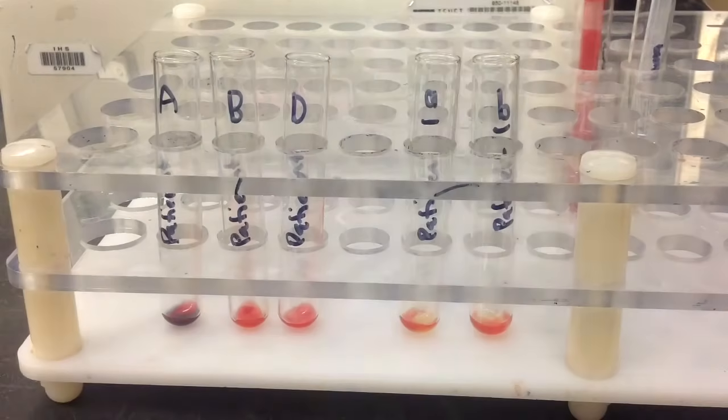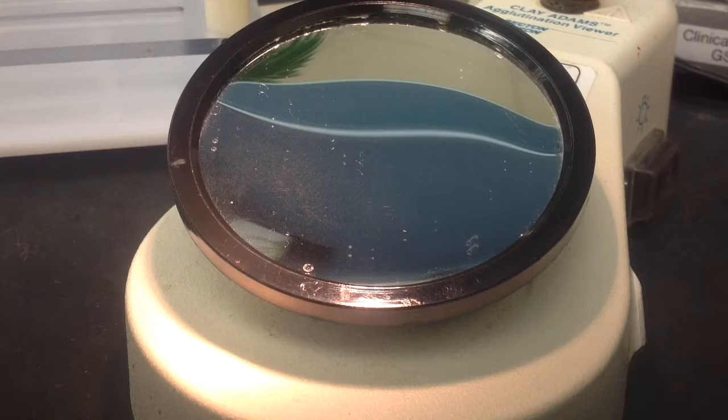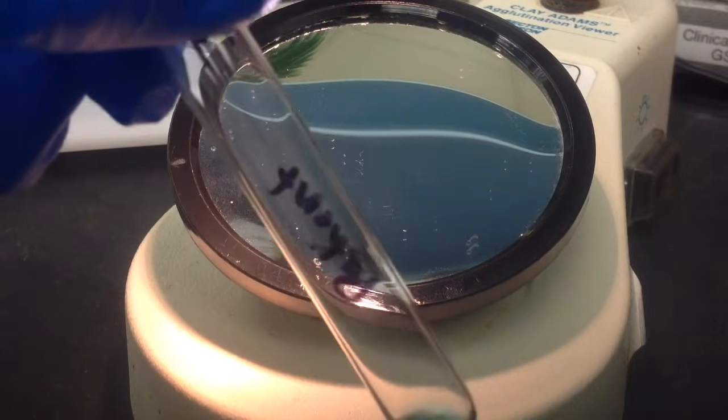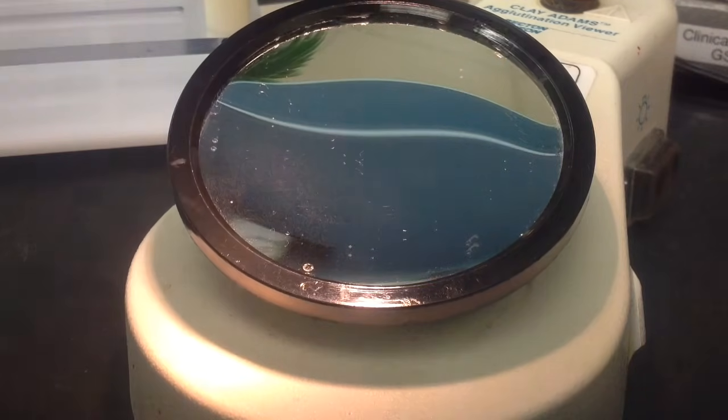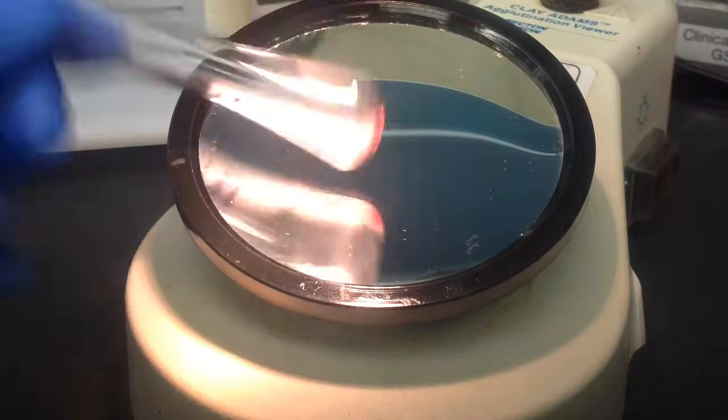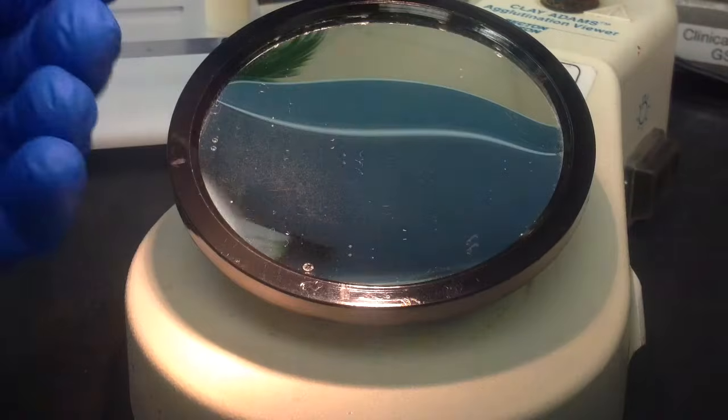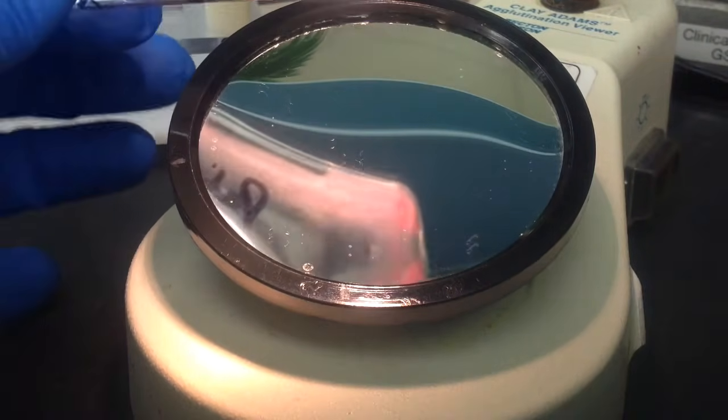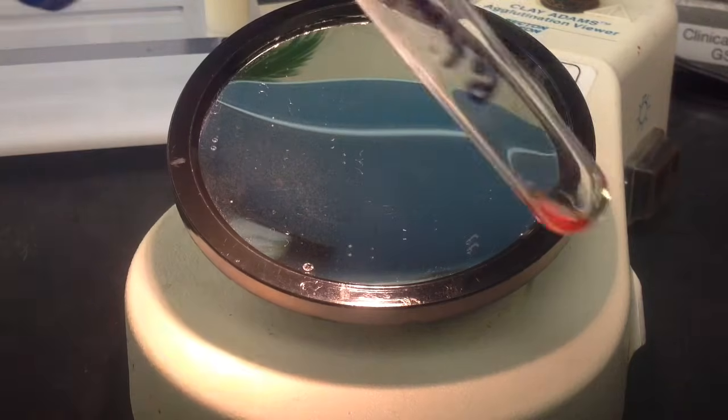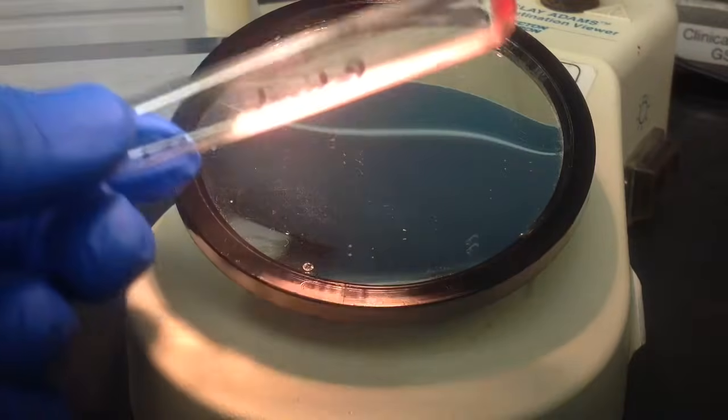And after you've added your patient specimens to each of the tubes, you go ahead and centrifuge this. And then we'll move on to the agglutination viewer. And what you're basically trying to do here is to gently resuspend the cell button and just remove it from the bottom of that tube. You can see there, we're getting a zero reaction. All of the red blood cells from the cell button are completely clean off. There's no agglutination.